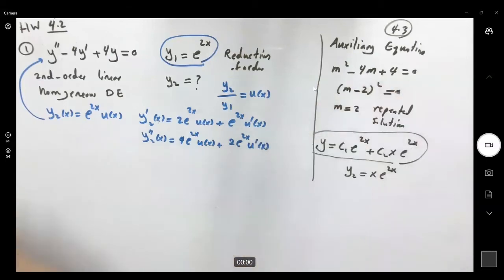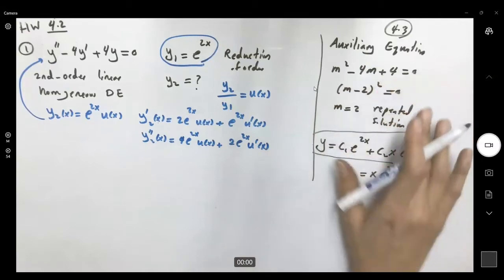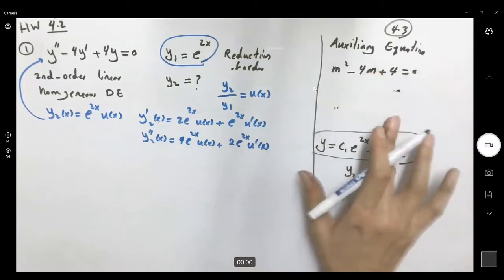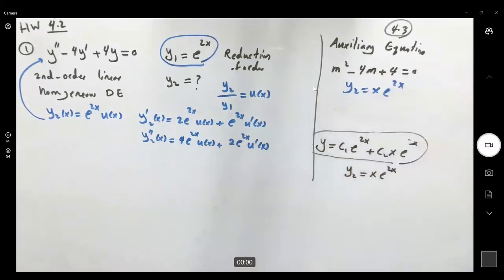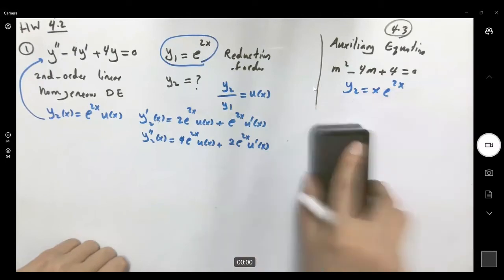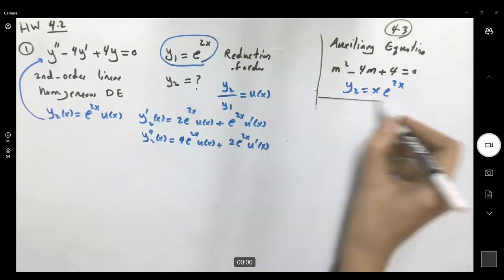I'm going to erase this part of the board. I'm going to just write down this guy here using the auxiliary equation that y2 must be x e to 2x. Keep that in mind.